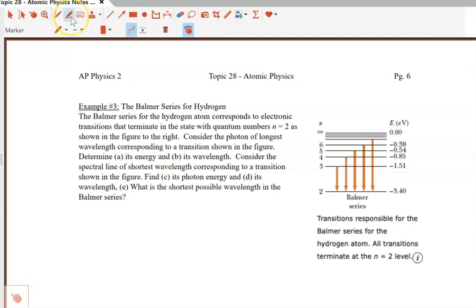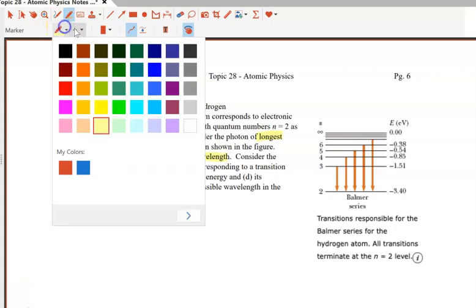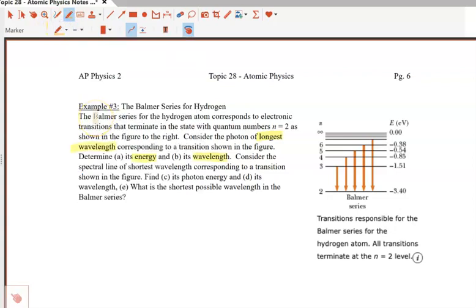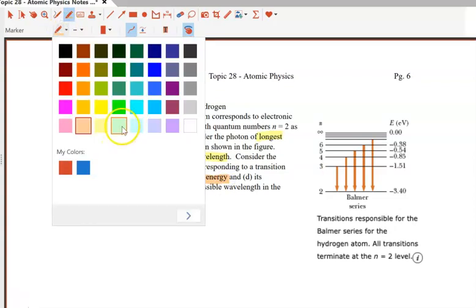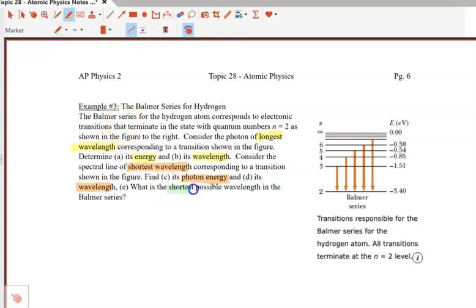The Balmer series are all the transitions from n equals 3 or higher down to n equals 2. In the first part of the questions, part A and B, we're looking at the longest wavelength and we're asked to calculate the energy and the wavelength. In the next question, we're considering the shortest wavelength and we'd like to know what its photon energy is and its wavelength. In the last part, they're asking what is the shortest possible wavelength, because parts C and D are just referring to the ones we can see in the series. Let's start off with answering part A and B.